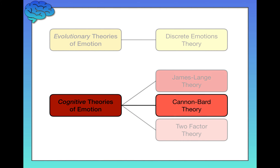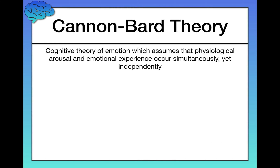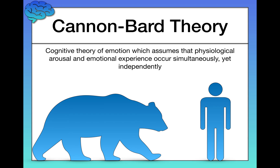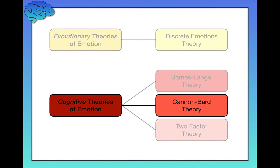Next we have the Cannon-Bard theory. It involves the same components — emotion, stimulus, bodily reaction — but the order is different. The Cannon-Bard theory assumes that physiological arousal and the emotional experience occur at the same time, independently of one another. So again: you're out for a walk, you see a bear, and you get that bodily reaction and the emotion simultaneously. That's the Cannon-Bard theory.